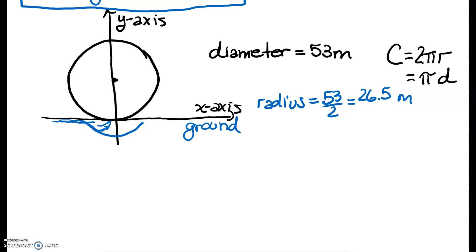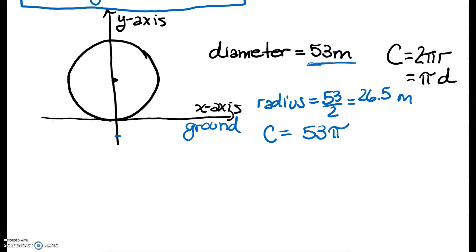For the sarsen circle, they ask you to compute the circumference. The formula is C = πd, and since we have d = 53 meters, the circumference is going to be 53π meters. So I have my radius and my circumference.